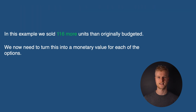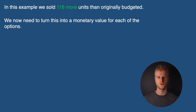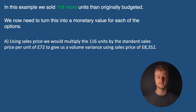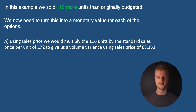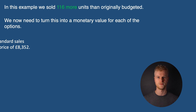Method A — using the sales price: we multiply the 116 units by the standard sales price per unit of £72 to give us a volume variance using sales price of £8,352.